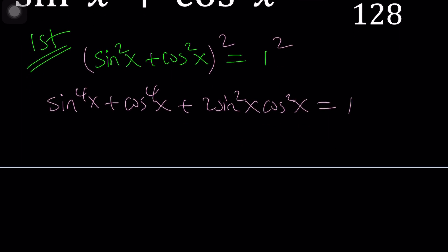And then from here basically my goal is to get some type of relationship between the sum of squares which is one and the sum of eighth powers. So for that purpose I'm going to isolate the sum of the fourth powers and write this as one minus two sine squared x cosine squared x.